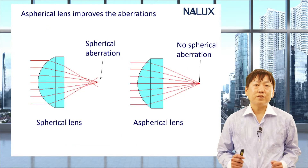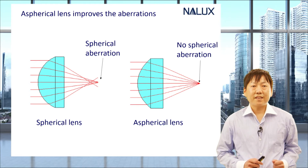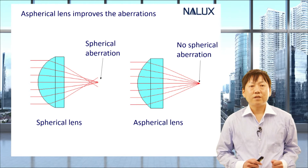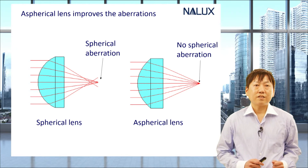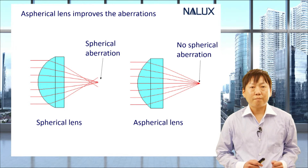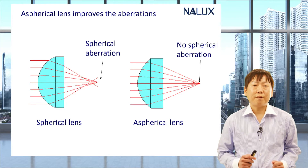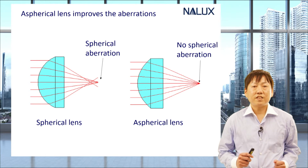Let's start with the basics of aspherical lenses. By making the lens shape aspherical, spherical aberration can be removed. Aspherical surfaces also offer a variety of other advantages for optical systems, including a reduction in the number of lenses, and improved condensing performance, beam quality, and efficiency.